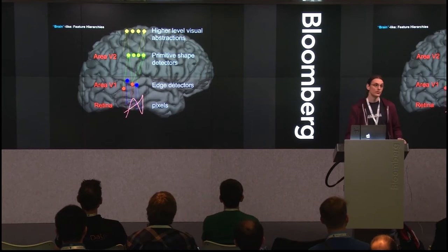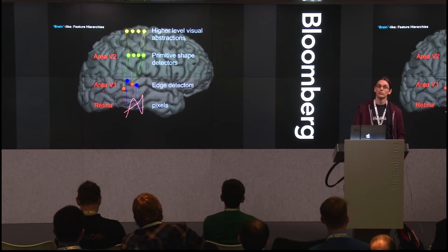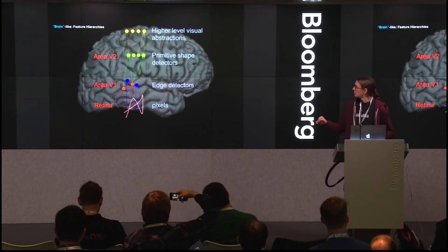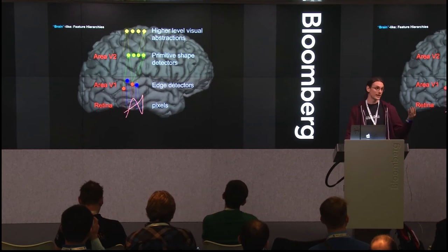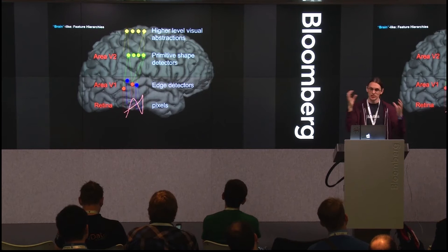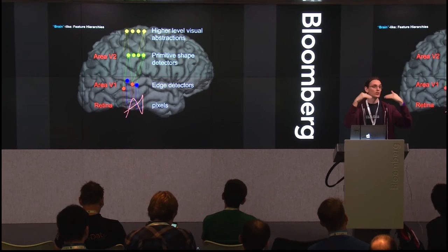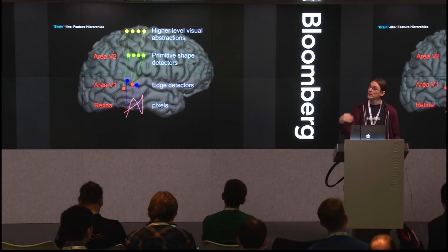Deep learning is biologically inspired by the brain — a very simplistic version, but it works as a metaphor. In the visual cortex, neurons closest to your vision detect very simple edges. These edge detections combine at higher levels, and neurons further along construct increasingly complex representations in a hierarchical fashion. This biological inspiration is what kicked off deep learning.